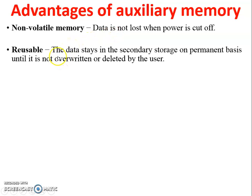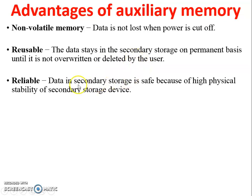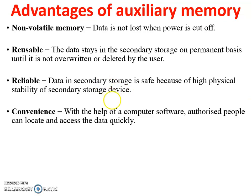Now, advantages of auxiliary memory. First, it is non-volatile memory, as already discussed. Second, it is reusable — it is permanent memory, so you can store data anytime. The data is not overwritten or deleted by the user, so you can access data for a lifetime. Third, it is reliable — data in secondary storage is safe because of the high physical stability of the secondary storage device.